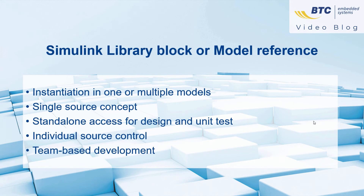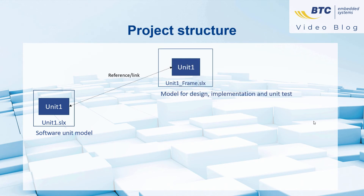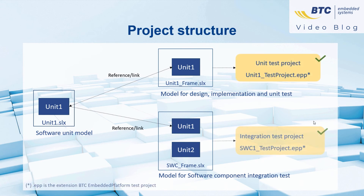As an example, in your project you can have one model implementing the software units, a frame model referencing the unit for software unit tests, and a frame model referencing all units to integrate them into a software component model. During testing, you can manage the complexity of your test process by having one test project per software unit and a test project for the software component.